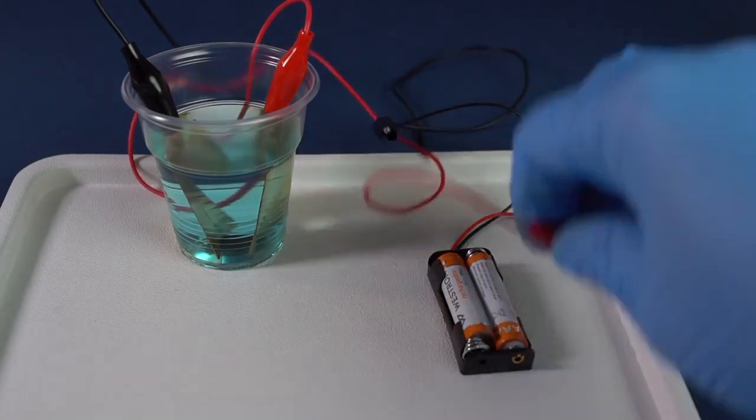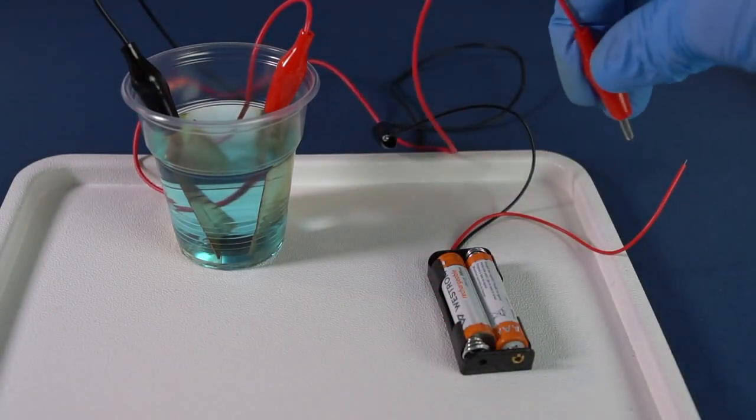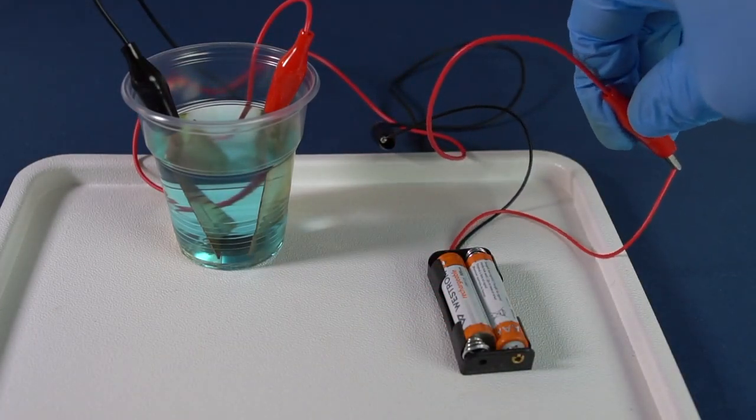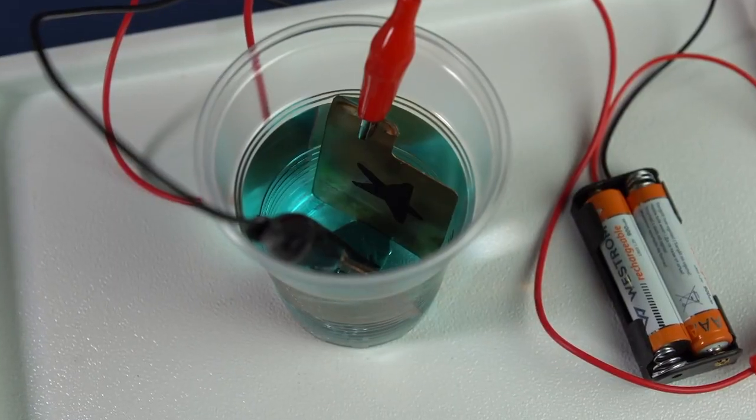Put the batteries into the battery holder and connect the wires with the crocodile clips with the corresponding color. Now wait for 30 minutes.